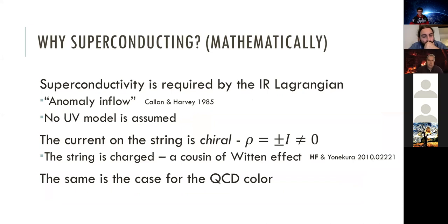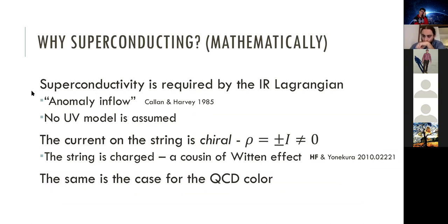In the language of anomaly inflow, the superconductivity is rephrased as anomaly inflow. When using anomaly inflow, what is required is only the IR Lagrangian — the a GG-tilde coupling is enough. So the axion string is also superconducting in QCD contexts. The current on the string is chiral, meaning the charge density is always associated to the current.